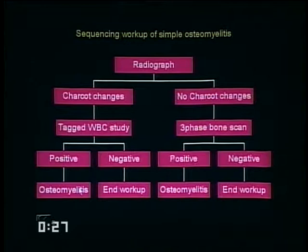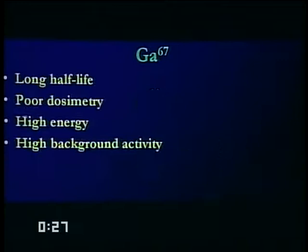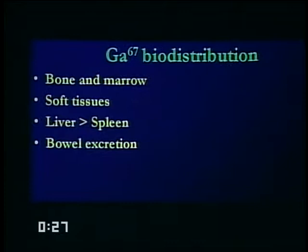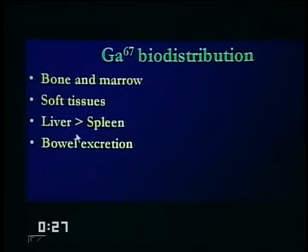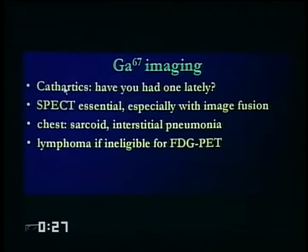Gallium-67 citrate is historical — like sinus radiography. Some people still do it; I have no idea why. It has a long half-life, poor dosimetry, very high energy, and very high background activity, making it very difficult to determine if something is actually abnormal. It is seen in the bone, marrow, soft tissue, liver, spleen, and is excreted in the bowel. People try to give cathartics to clean out bowel activity, but these are sick people — you're making them more uncomfortable. However, in the chest, gallium is invaluable for quickly and inexpensively detecting active sarcoid or interstitial pneumonia.